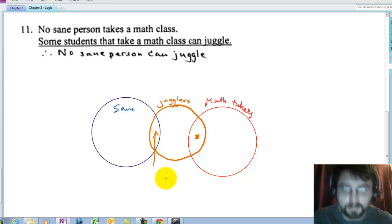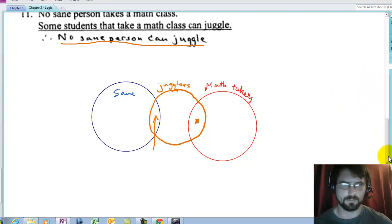But look, there could possibly be an overlap. So it's not the case that no sane person can juggle. Not necessarily. Juggler and sane do not necessarily have to be disjoint. There's nothing in the premises that preclude them from overlapping. Okay. Not valid.